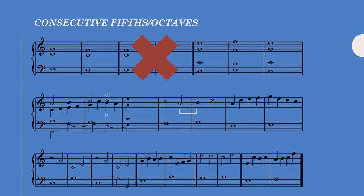Parallel fifths or octaves separated by at least a whole note's worth of note values are allowed. In this bar, we have two half notes separating the two fifths — two half notes equals a whole note, so these are okay. In the next bar, we have only three quarter notes separating the two octaves, so these are forbidden. We need at least four quarter notes to meet the whole note value separation requirement.